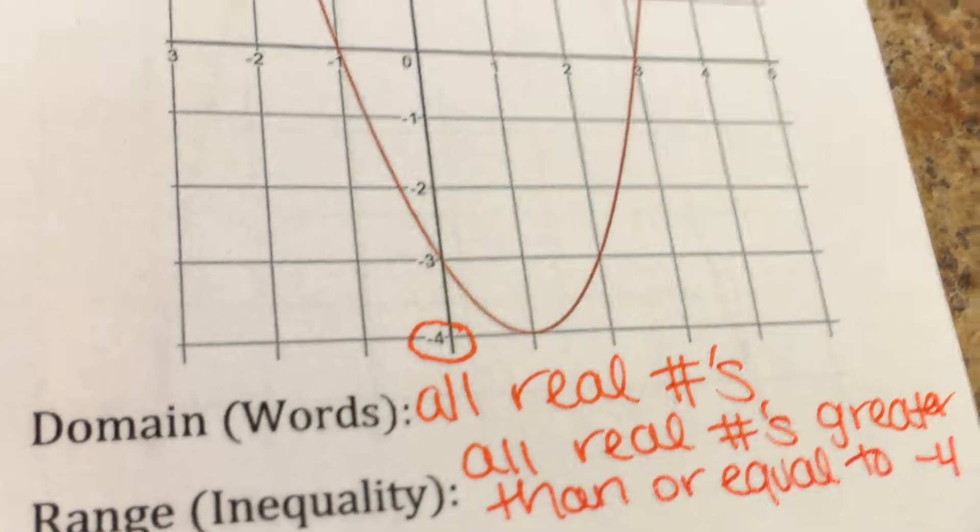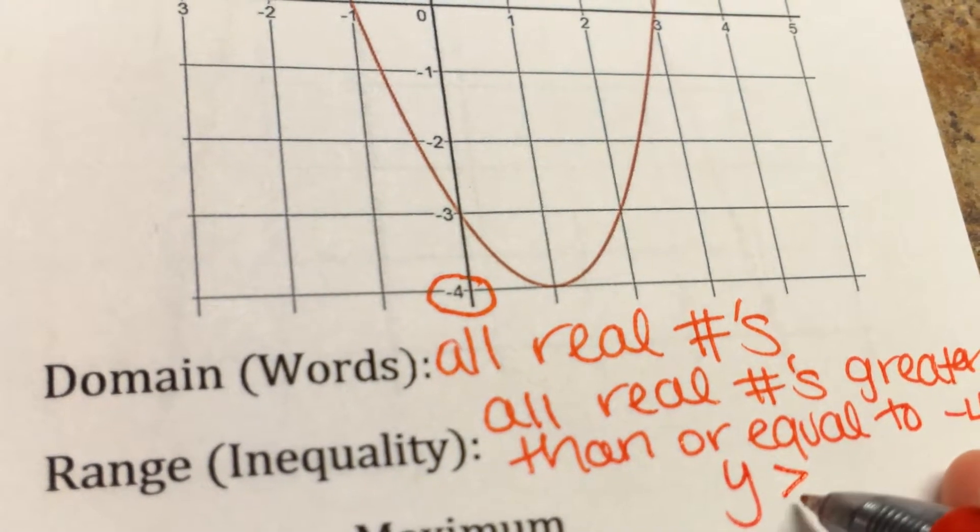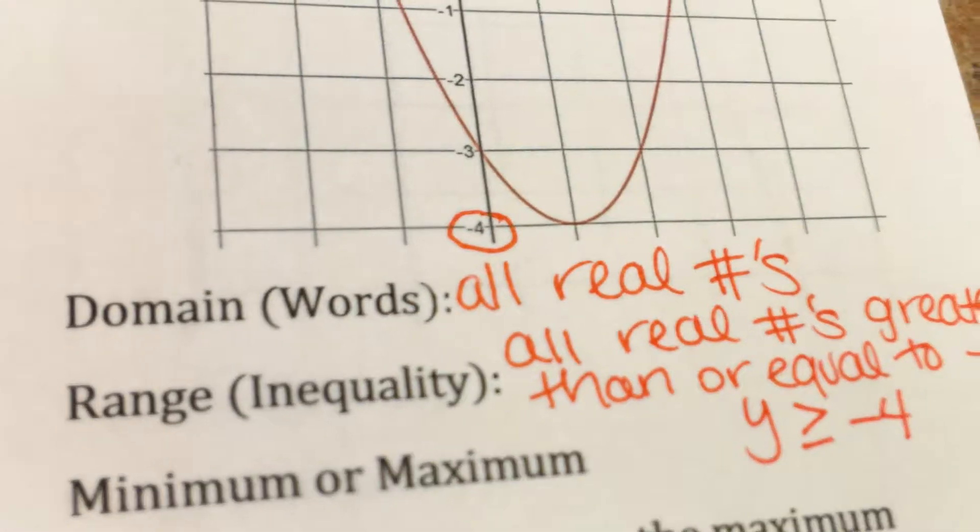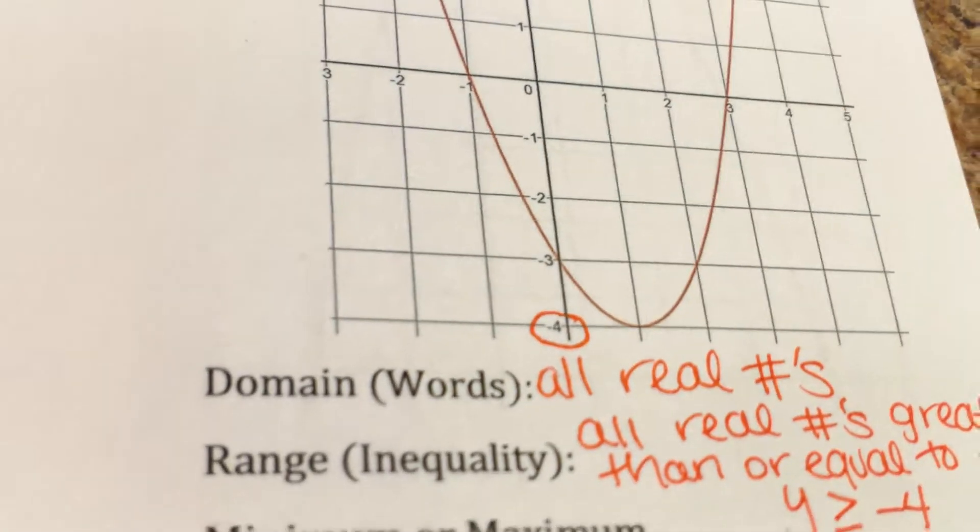The way we would write it as an inequality would be y is greater than or equal to negative 4. That's the way you would write it as an inequality. Now this one has a low point, so it has a minimum.